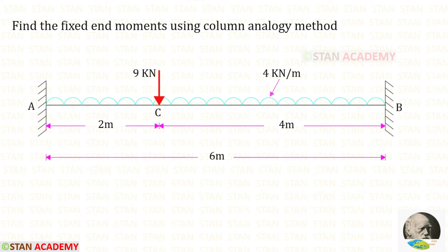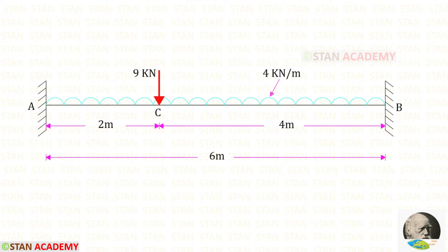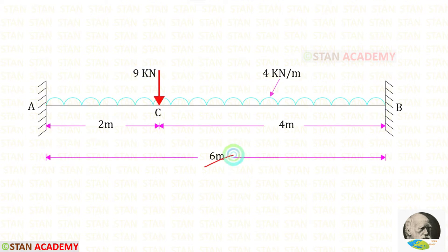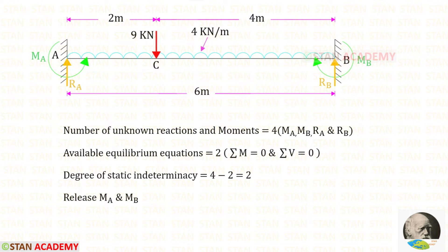Hello everyone. Today we are going to find the fixed end moments in this beam using the column analogy method. In this beam there are two loads: one point load of 9 kilo newton acting at a distance of 2 meters from point A, and a uniformly distributed load of 4 kilo newton per meter acting for the whole span. The span length of the beam is 6 meters. The degree of static indeterminacy is 2, so to make this beam statically determinate, let us remove Ma and Mb.